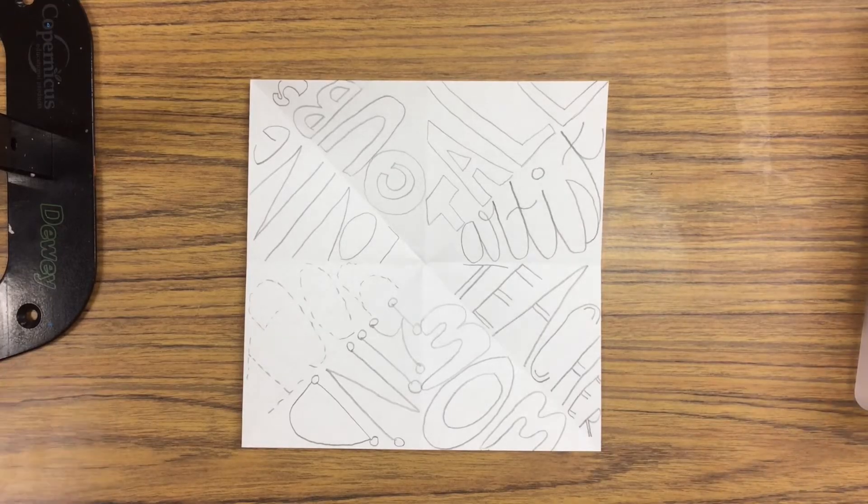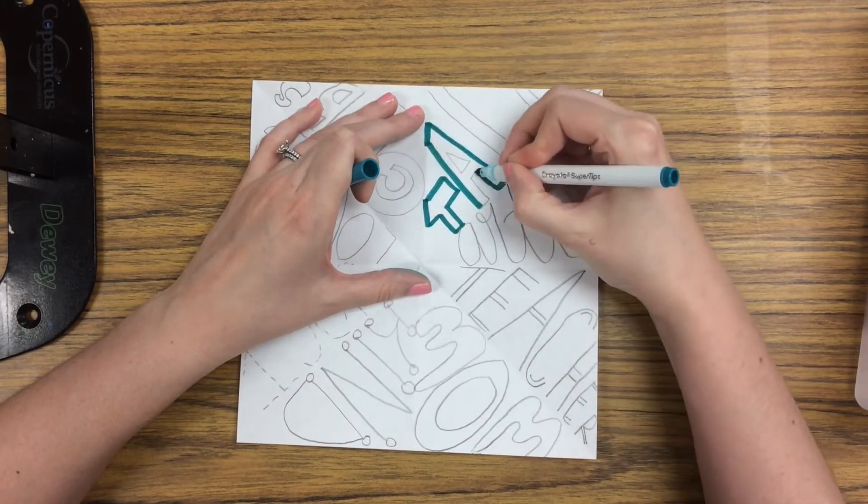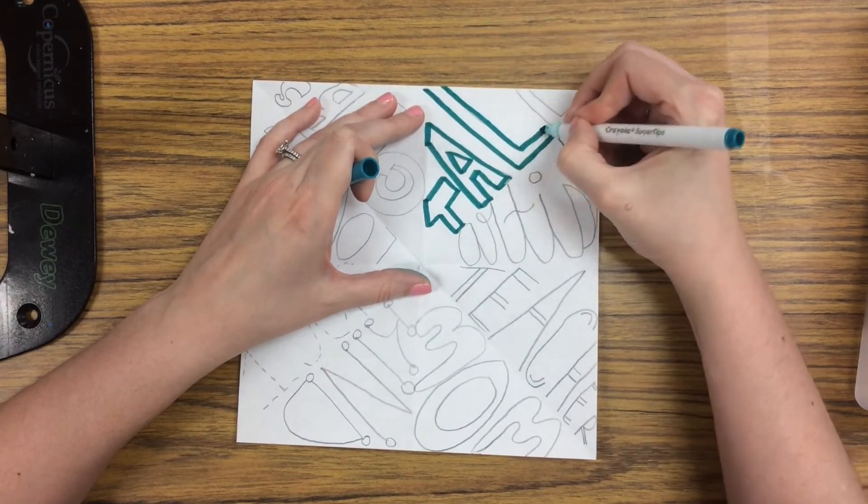When you finish writing out all eight words in pencil, you can choose what coloring materials you would like to use. I am using markers for my words and crayons for the background.